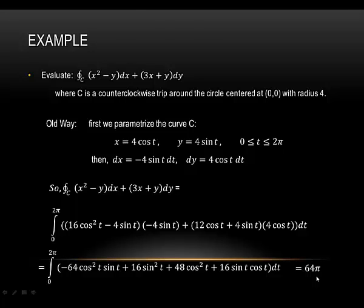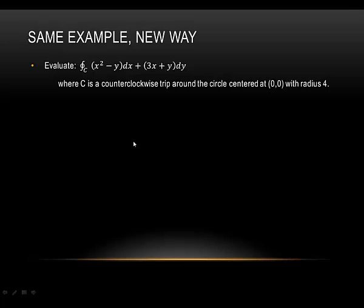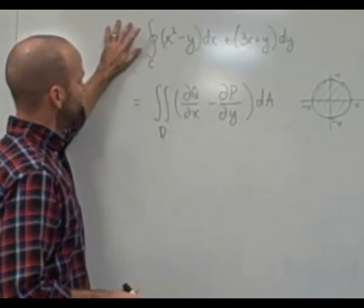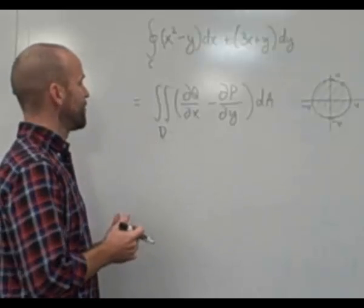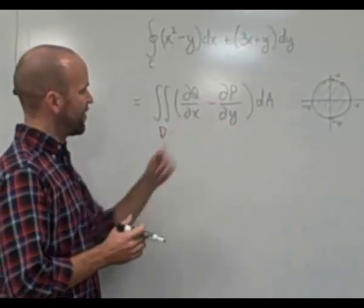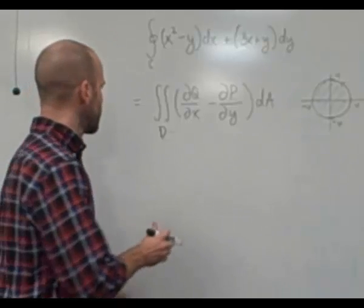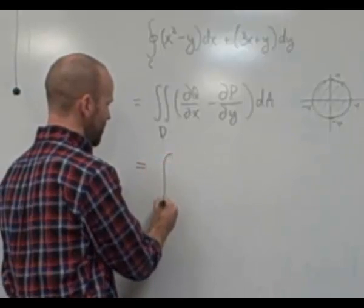The other way is to apply Green's Theorem. C meets the criteria: a counterclockwise trip around the circle means it's positively oriented, and it's definitely a simple closed curve. According to Green's Theorem, I can replace my line integral with a double integral of the corresponding expression, integrating with respect to the area of the region inside the circle. You're going to see that this makes things much, much easier.